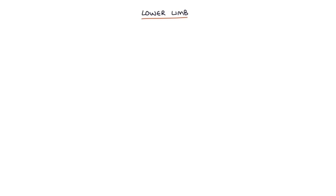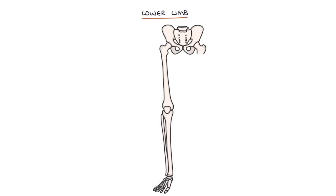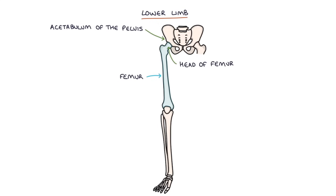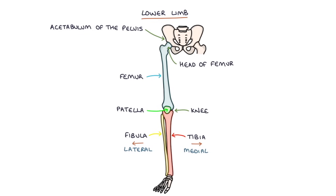Next let's move on to the lower limb. The longest bone in the body is the femur, or the thigh bone. The head of the femur connects with the acetabulum of the pelvis to form the hip joint. The femur joins with the tibia and the fibula at the lower leg to form the knee joint. The tibia is medial, closer to the midline, and the fibula is lateral, on the outer aspect of the leg. At the front of the knee is the patella, commonly called the kneecap.